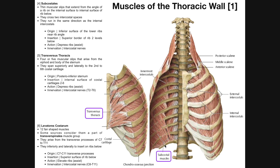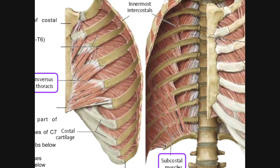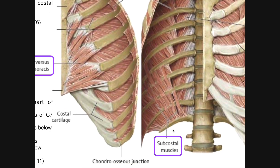If we zoom in, we'll actually see the subcostal muscles. Here's one subcostal muscle right here. It has one attachment down here on this particular floating rib — this is actually rib number 12. And if we follow the fibers upward, we see that it actually has a superior attachment on this rib, which should actually be rib number 10.